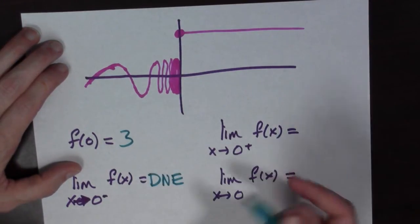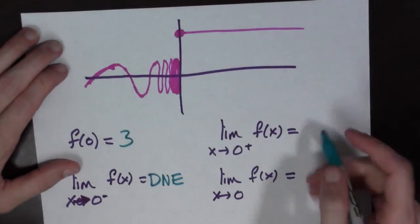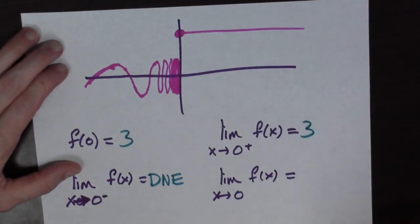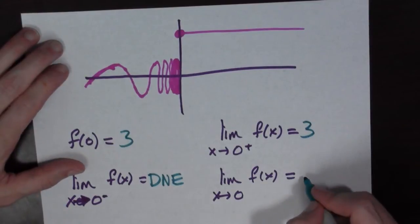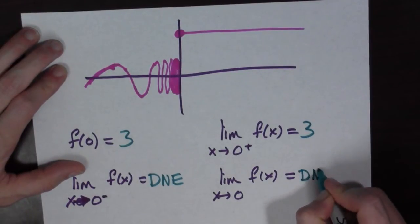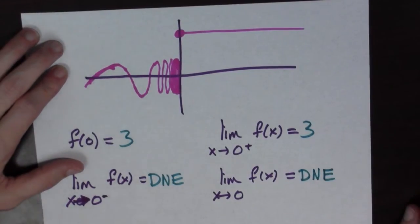Now, the limit of f of x as you're coming from the right, that's equal to 3 again. And the limit of f of x as x goes to 0, well, this does not exist. Wow.